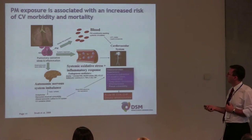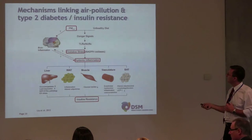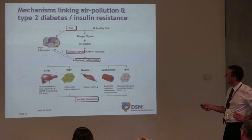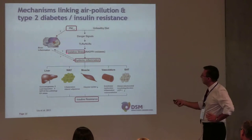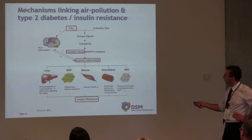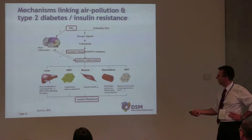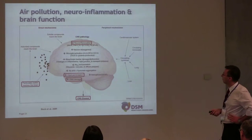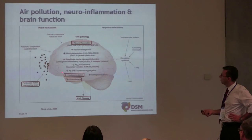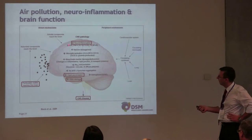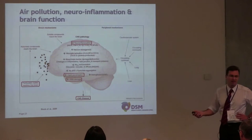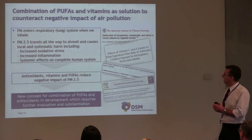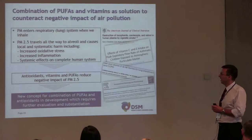Very briefly, type 2 diabetes and insulin resistance are also linked — although these are partly hypotheses — to a link between particulate matter pollution and the development of diabetes, which includes oxidative stress and systemic inflammation, ending up in insulin resistance. Vitamin E can also play a role here. For a third topic, brain function and cognition: there are some theories showing that particulate matter reaches the brain, causing neuroinflammation, lipid peroxidation, and DNA damage, and vitamin E can play a significant role.